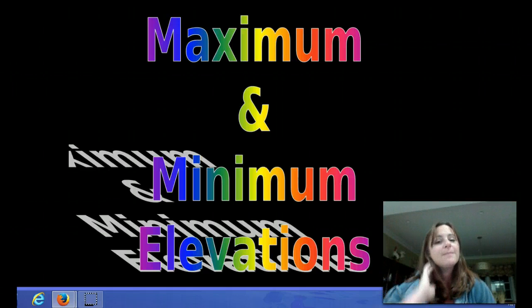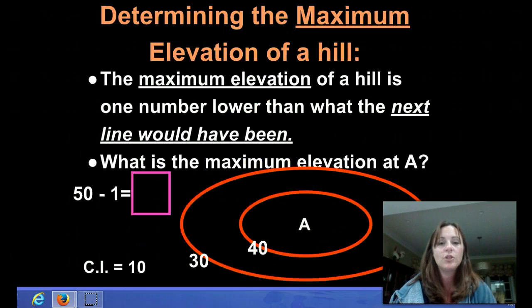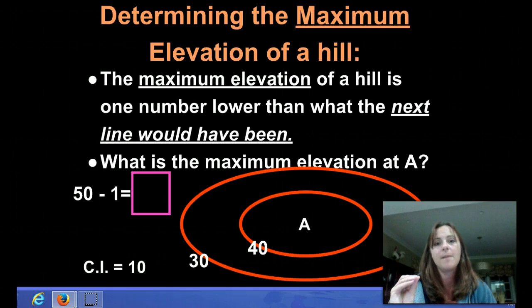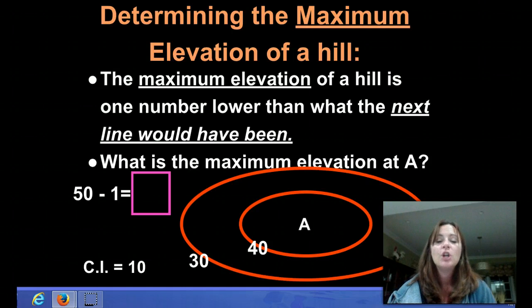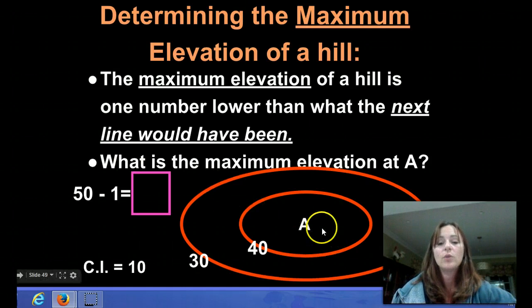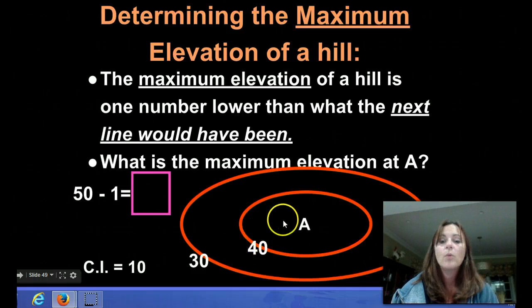Okay, we're going to move on to maximum and minimum elevations. Maximum and the minimum elevations are really when we're talking about a hilltop that we don't know the exact most amount or the highest peak. The maximum elevation of a hill is one number lower than what the next line would have been. So let's take this example at A. A, we don't know what the peak is, but we know that the last line that we see here is 40. This elevation is 40.